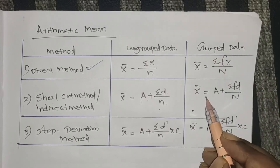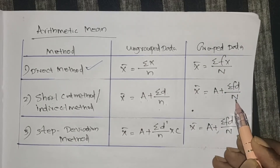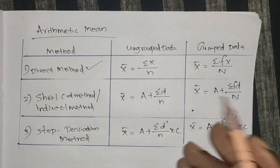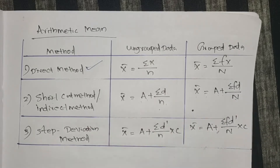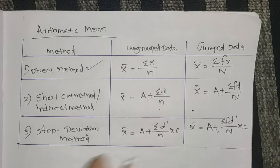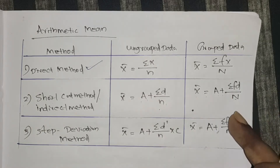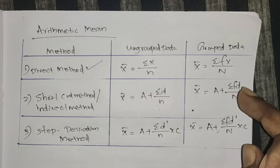For grouped data, x̄ equals A plus sigma fd divided by N. For grouped data, we will discuss the frequency, the numbers, and the classes.